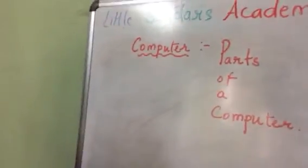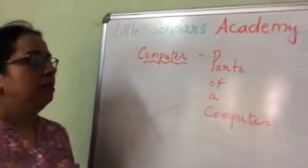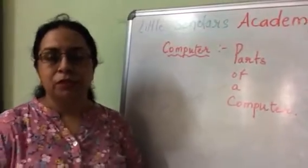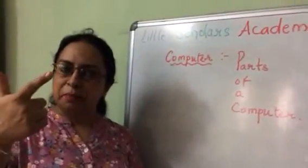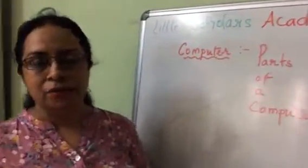So we have done parts of computer. What are the different parts of a computer? There are 4 main parts of computer: Monitor, CPU, keyboard and mouse.